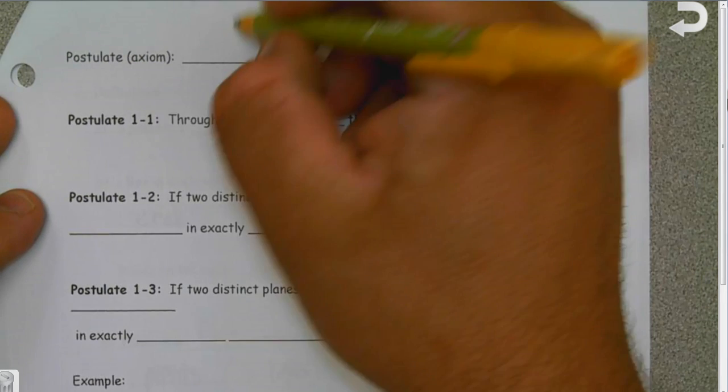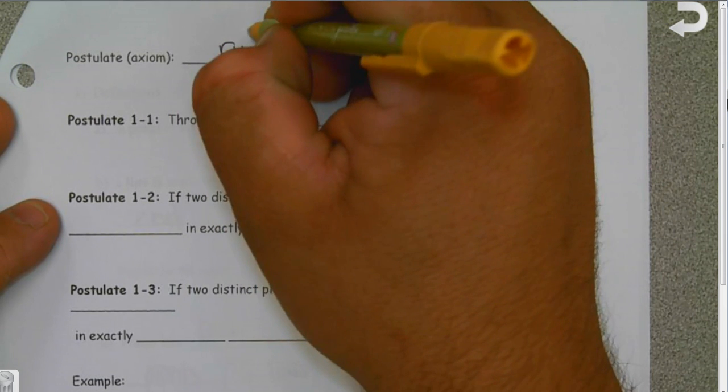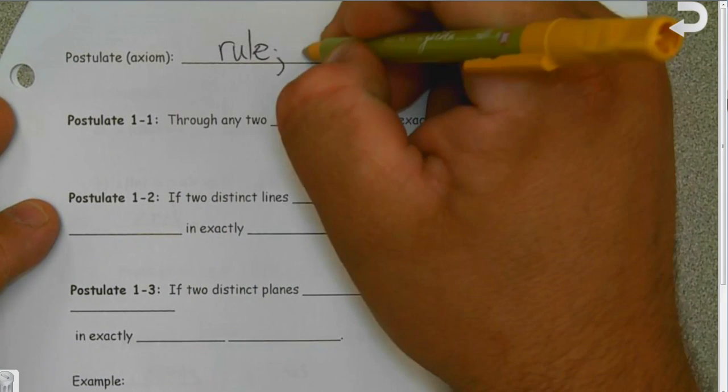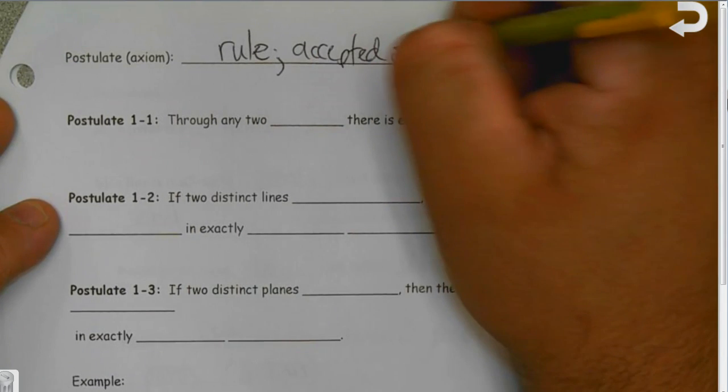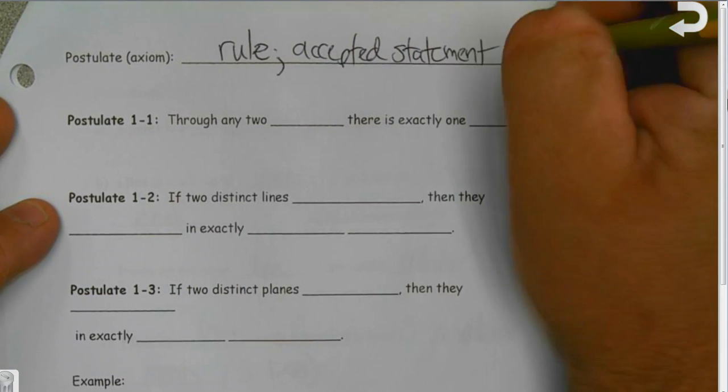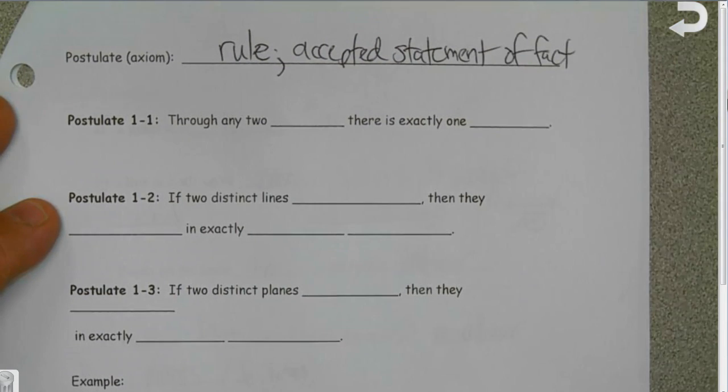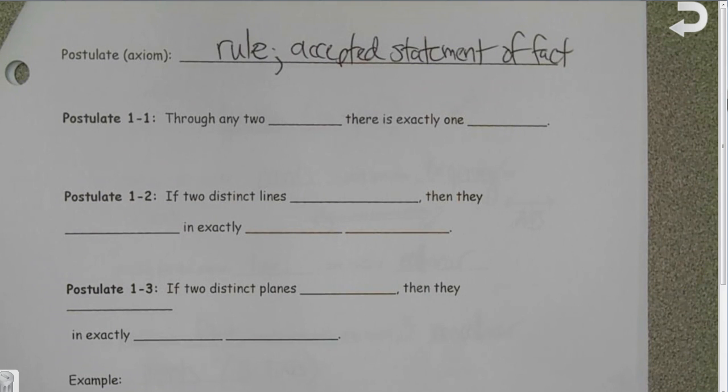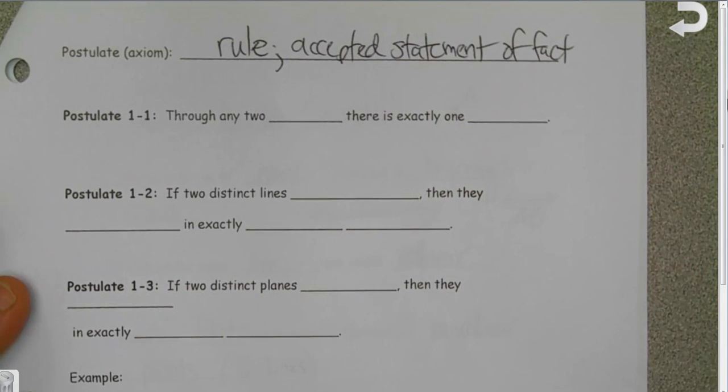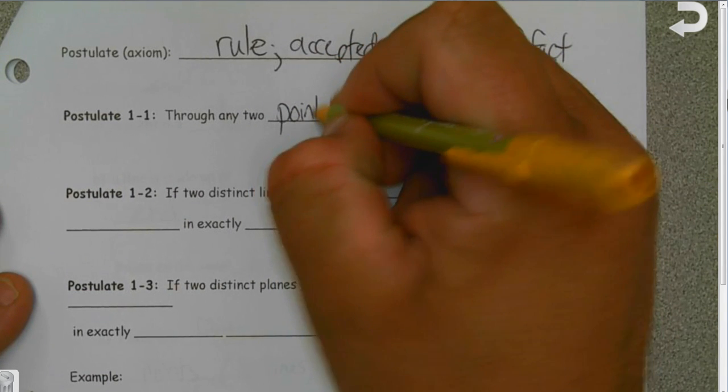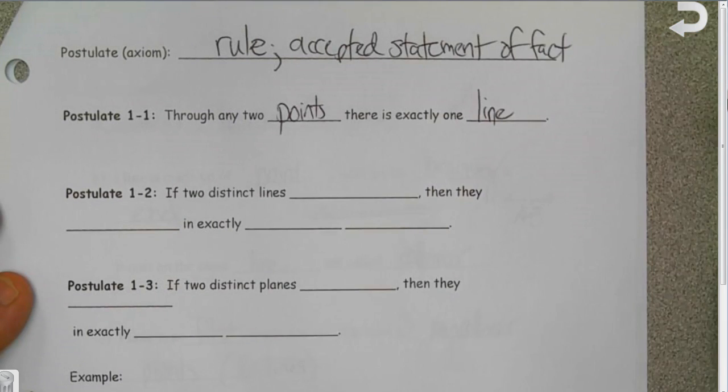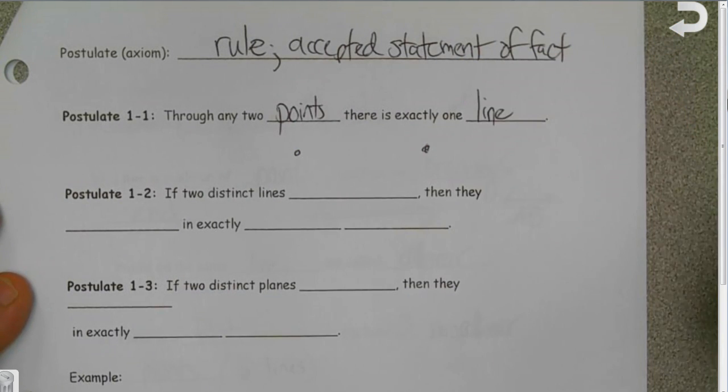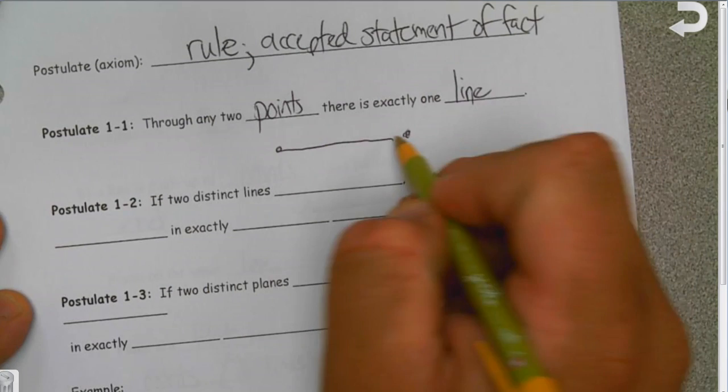A couple more things here to kind of cover our basis on stuff. A postulate or an axiom is basically a fancy word for a rule or an accepted statement of fact. This is what makes geometry better in some cases than other maths, because there are set rules to follow in geometry. Through any two points, there is exactly one line. So if I put A and B here, there is only one way directly from A to B.